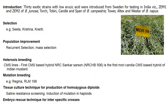In heterosis breeding, CMS lines are used. The first CMS-based hybrid, NRC Shankar-Sarso, is the first Mori-Candia CMS-based hybrid of Indian mustard. In mutation breeding: Regina and RLM 198 were developed. Tissue culture techniques are used for production of homozygous diploids; through this, saline resistant screening and induced mutation in haploids were done. The embryo rescue technique is used for interspecific crosses.